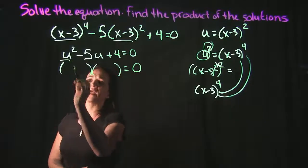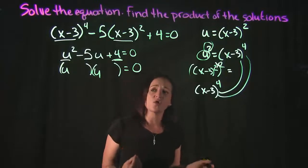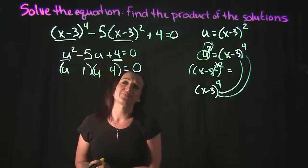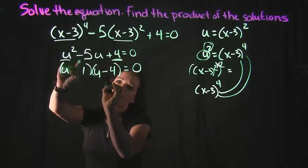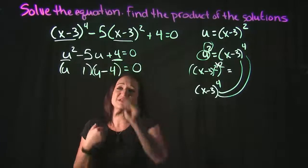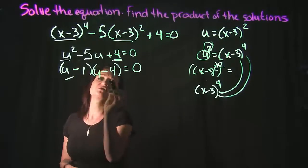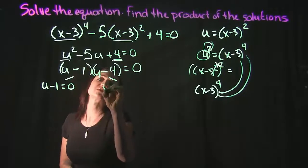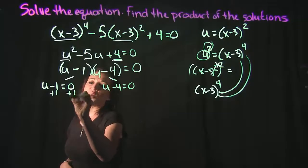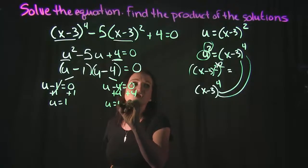Looking at u squared, that gives us u times u. The last term is 4, so we need factors of 4 that add or subtract to get 5. The factors of 4 are 2 and 2, or 1 and 4 — we want 1 and 4. The middle term is negative, so the bigger number gets the negative sign. Since the last term is positive, both factors need the same sign, so both are negative. Using the zero factor property, we set each factor equal to zero: u minus 1 equals 0 gives u equals 1, and u minus 4 equals 0 gives u equals 4.